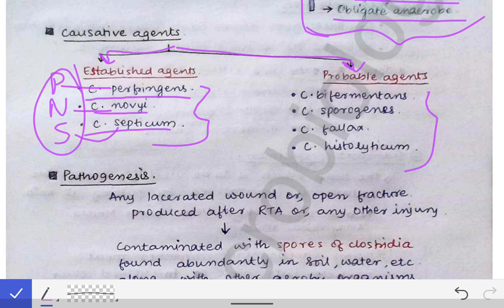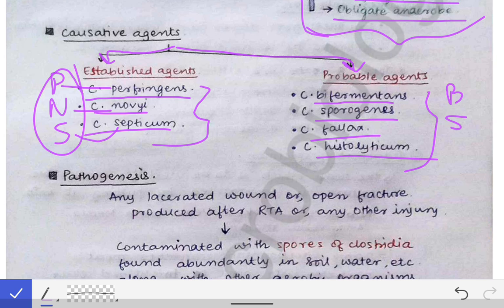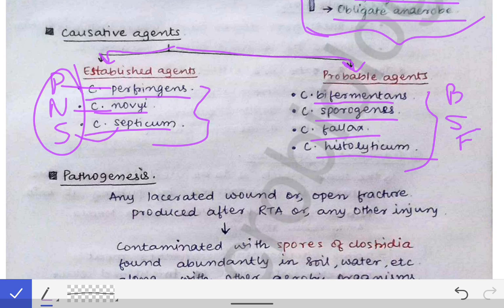The probable agents are Clostridium bifermentans, Clostridium sporogenes, Clostridium fallax, and Clostridium histolyticum. You can remember these with the mnemonic BSF — B for bifermentans, S for sporogenes, F for fallax — and H for histolyticum.